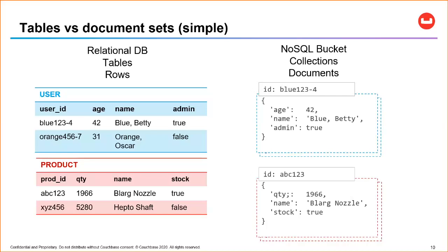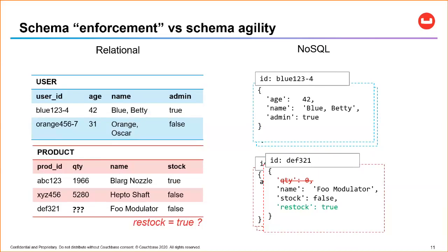These aren't just naming differences — there are underlying differences in how these work. Notice a small example here: in the relational product table, every row must have a value, even if it doesn't make sense. For instance, if you're storing a service in the product table, quantity might not make sense, but you have to put something — maybe a null or a magic number like zero or negative one. On the document side, however, quantity can just be flat out omitted if it doesn't apply.